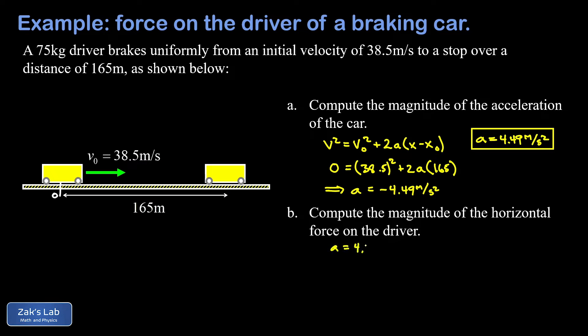So the magnitude of the acceleration for this person is 4.49 meters per second squared, and we know their mass is 75 kilograms. Well, Newton's second law tells us how to compute the force on this person. I can write down F = ma and just sub in the mass, 75 kilograms, and the calculated acceleration, 4.49 meters per second squared.